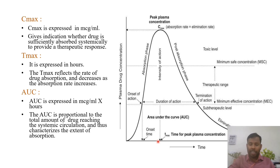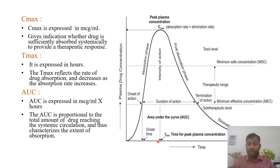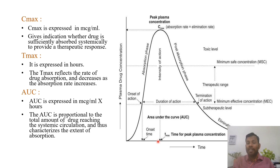For example, suppose 2 drugs are there. Drug A has a Tmax of 2 hours; Drug B has a Tmax of 4 hours. Drug A requires 2 hours to reach Cmax; Drug B requires 4 hours to reach Cmax. So which drug is rapidly absorbing? The answer is Drug A, because it requires only 2 hours to reach Cmax. Lower the value of Tmax, faster will be the drug absorption.